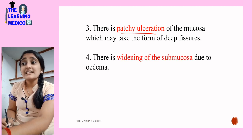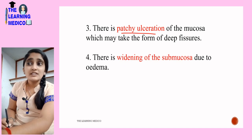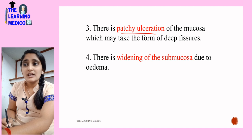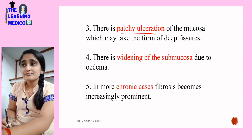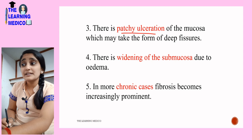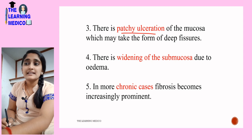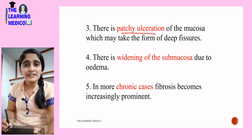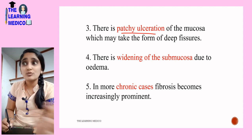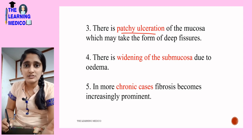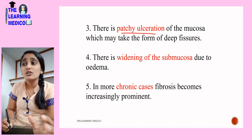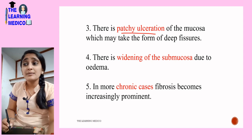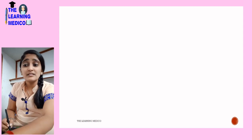There is widening of the submucosa due to edema. In more chronic cases, fibrosis becomes increasingly prominent — as the disease becomes chronic, fibrosis will be evident.